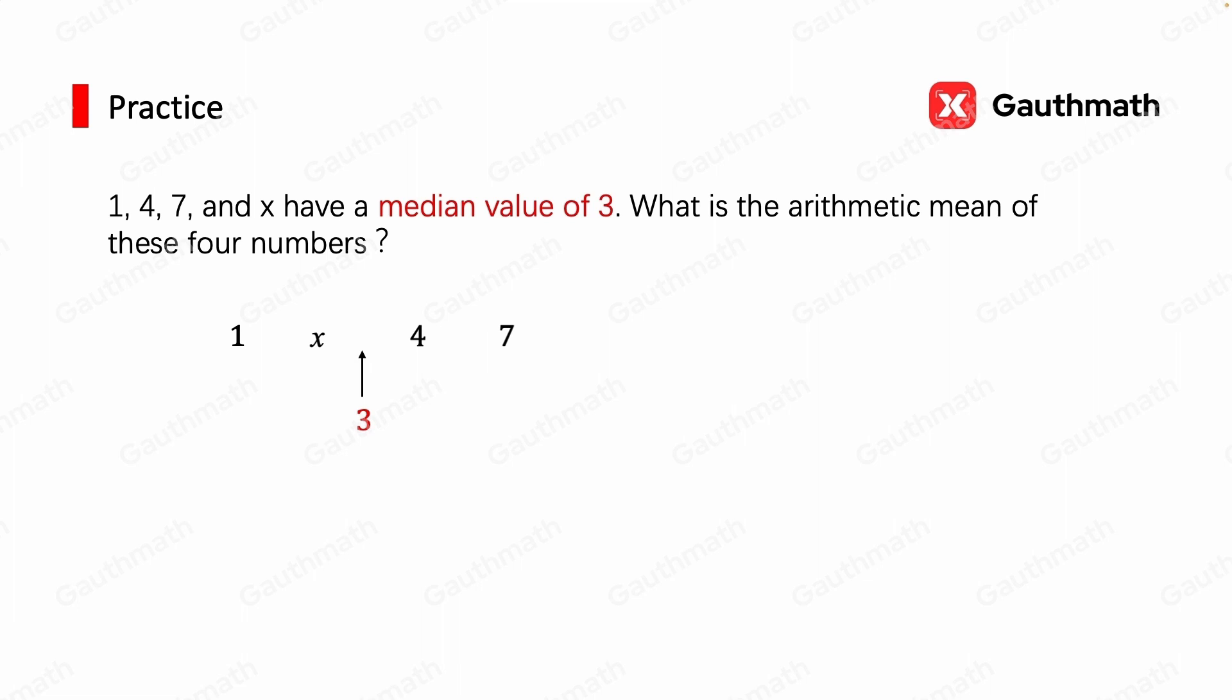So after some simple calculation, we can find that x must be 2. And so we have everything we need. It's time to compute the mean of these four numbers, which is the sum of all values divided by the number of values. And that gives 3.5 as our final answer.